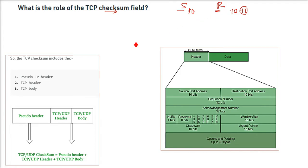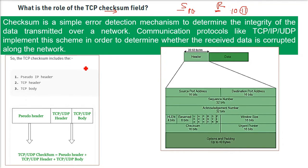So checksum is a simple error detection mechanism to determine the integrity of the data transmitted over a network. Communication protocols like TCP/IP and UDP implement this scheme in order to determine whether the received data is corrupted.